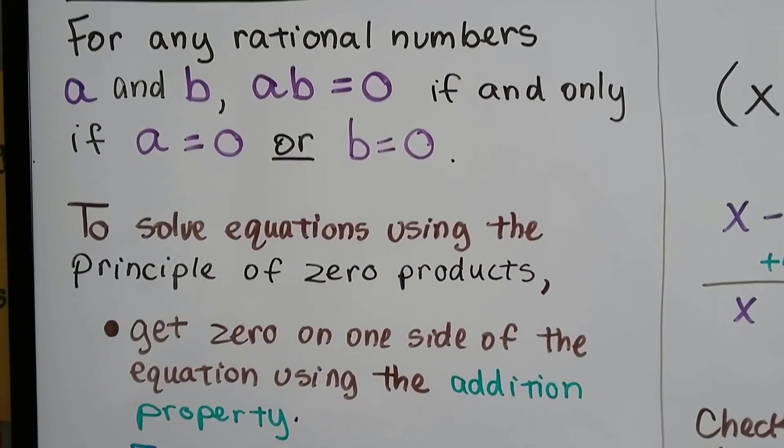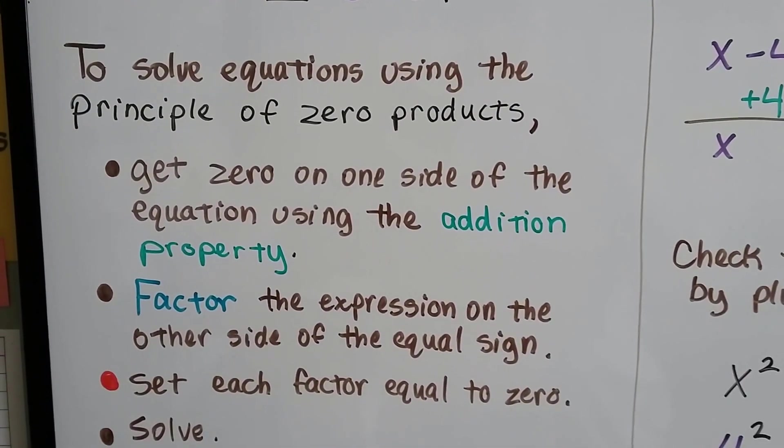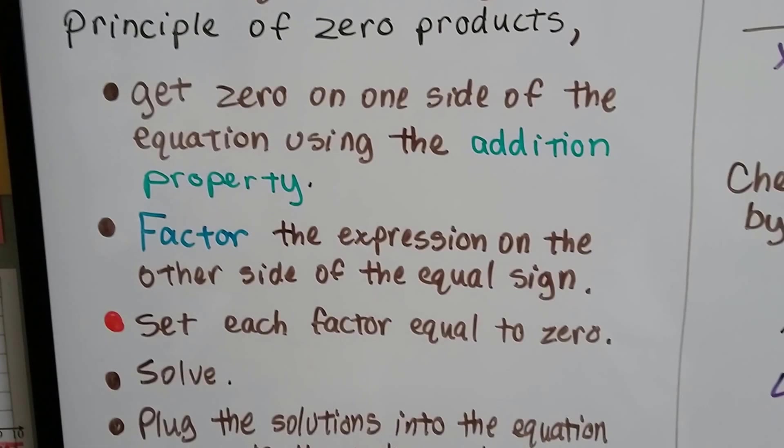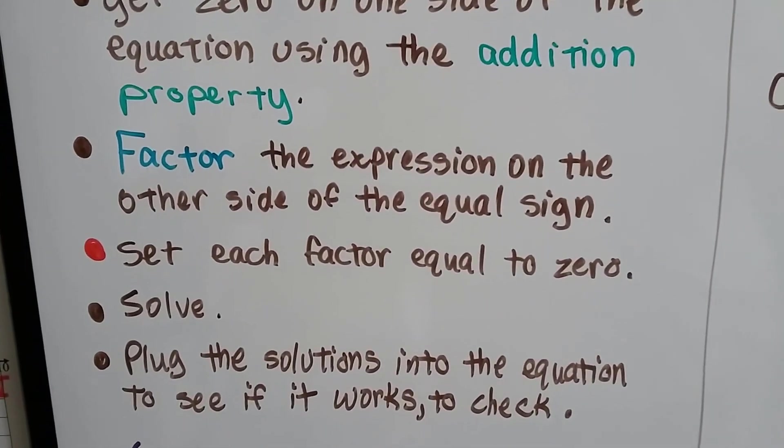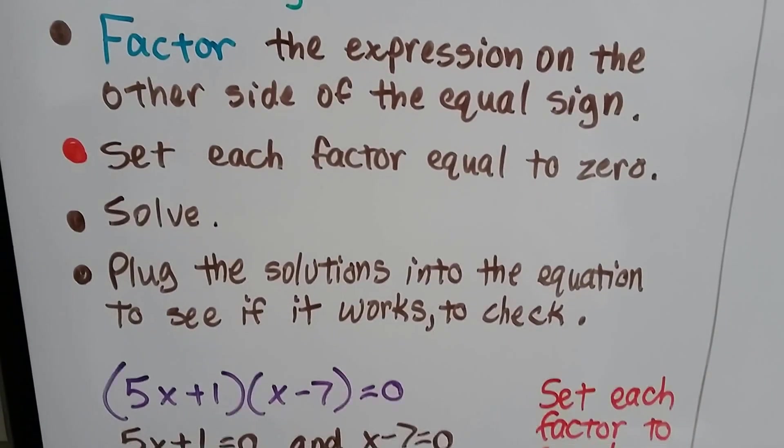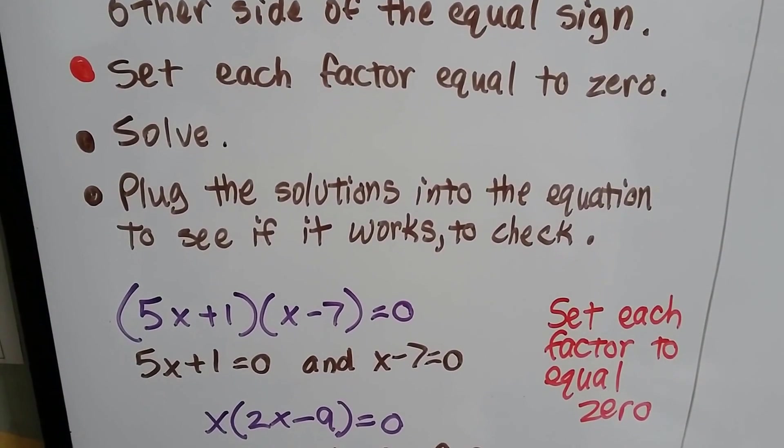To solve equations using the principle of zero products, we get zero on one side of the equation using the addition property, then we factor the expression on the other side of the equal sign, then we set each factor equal to zero and we solve it, and we plug the solutions into the equation to check.